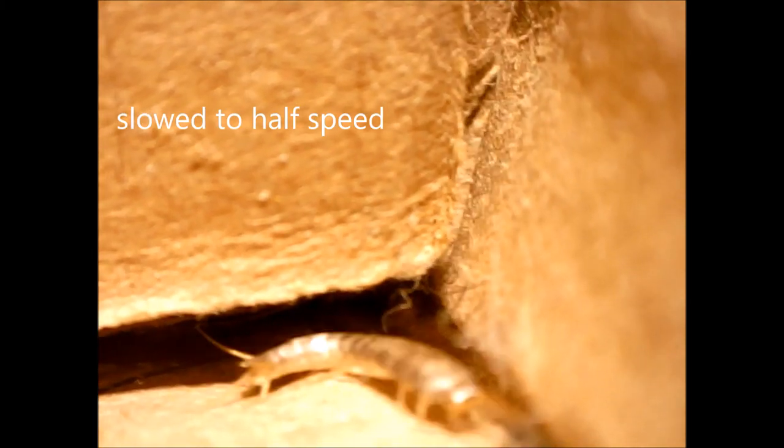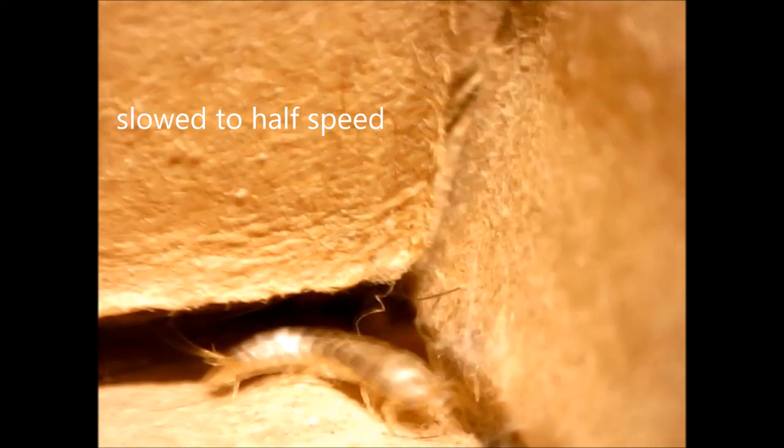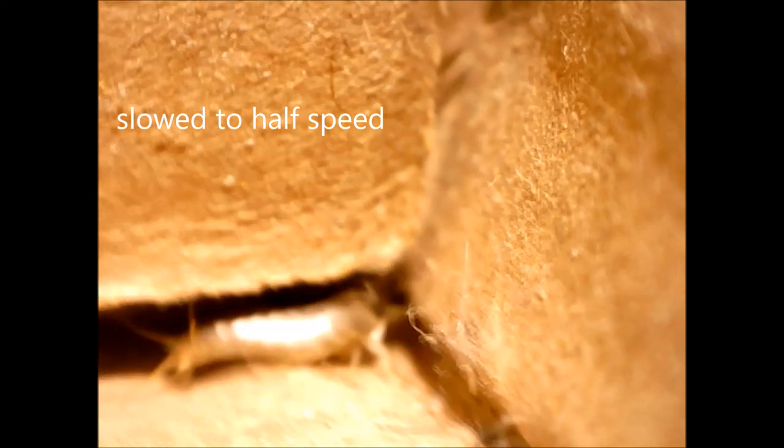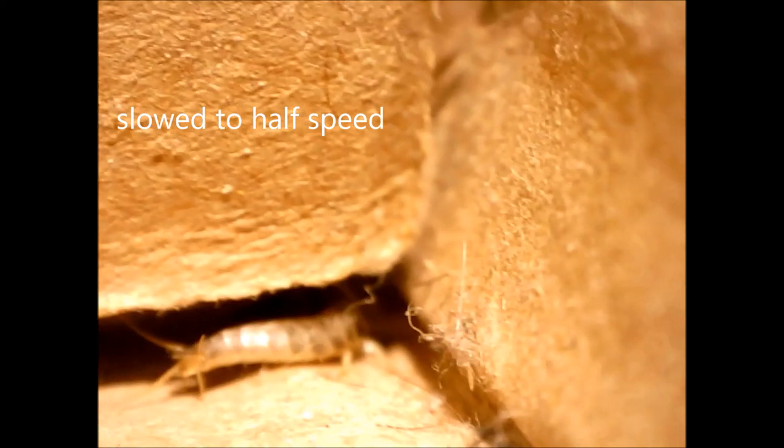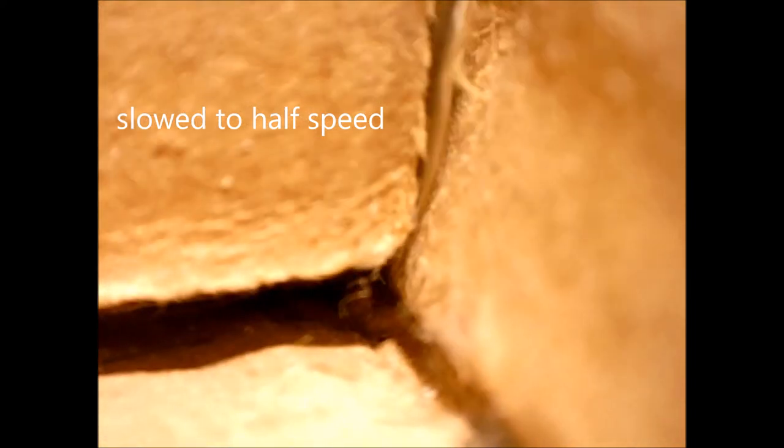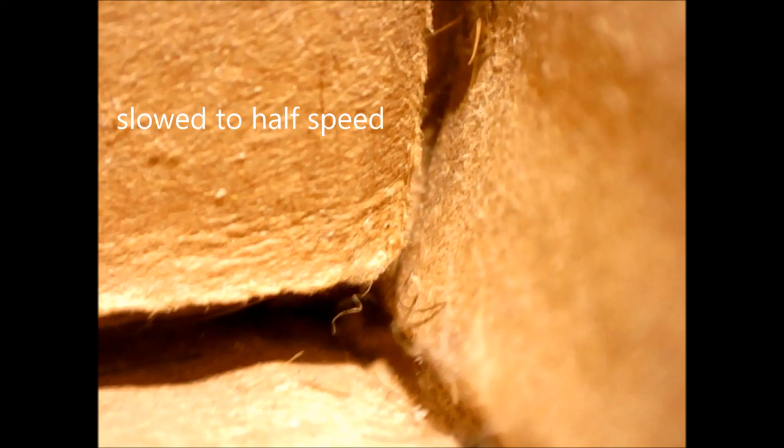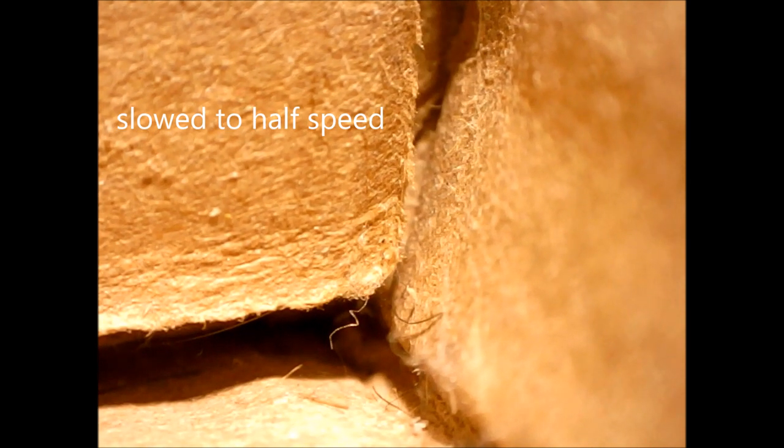Nonviolent ways to keep down silverfish populations in your home include keeping food in sealed containers or in the fridge, reducing sources of excessive moisture, reducing home humidity such as through air conditioning, and sealing home cracks.